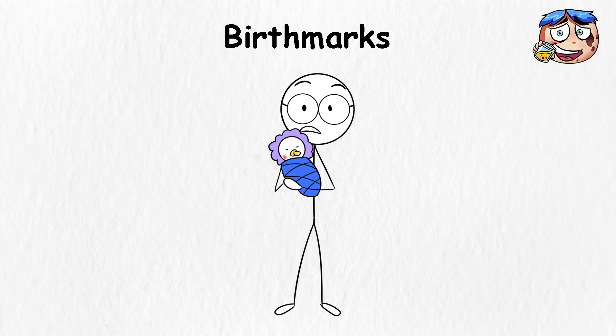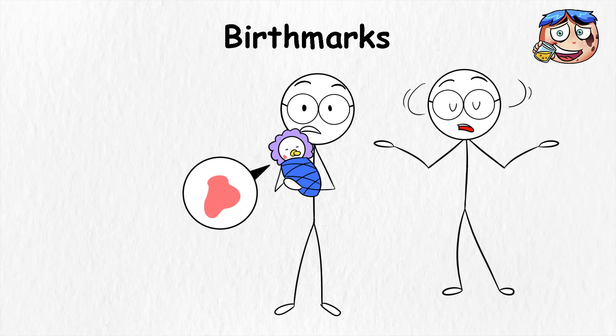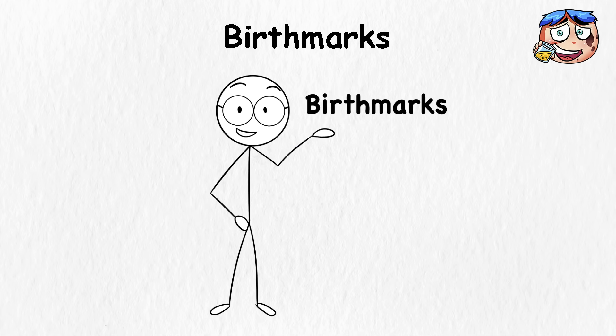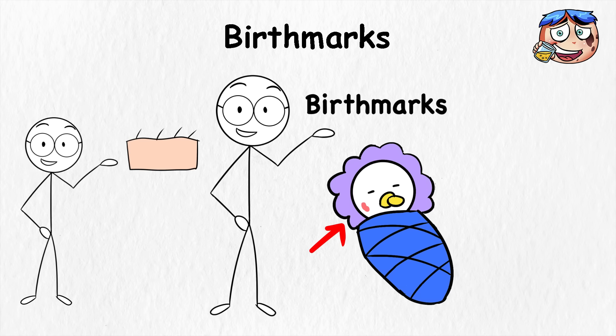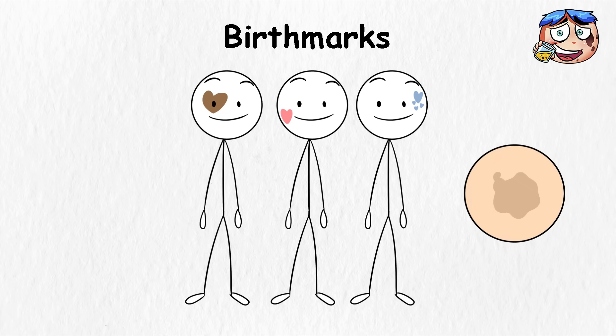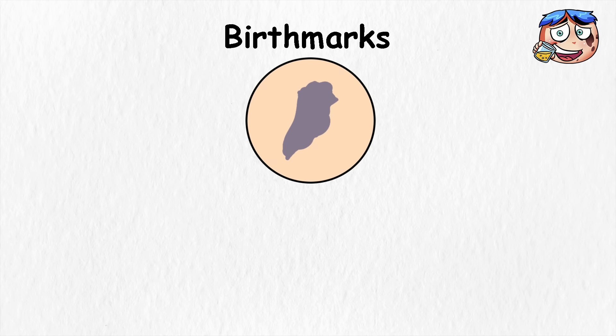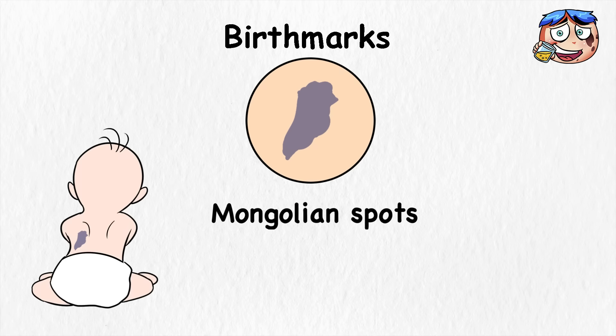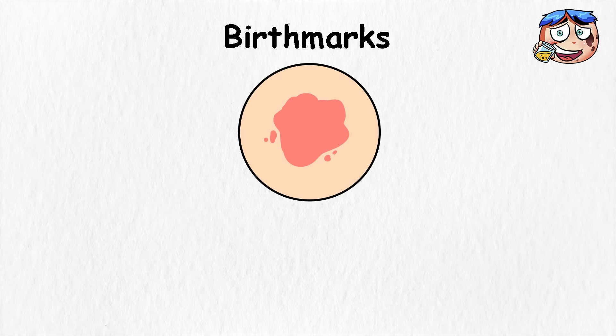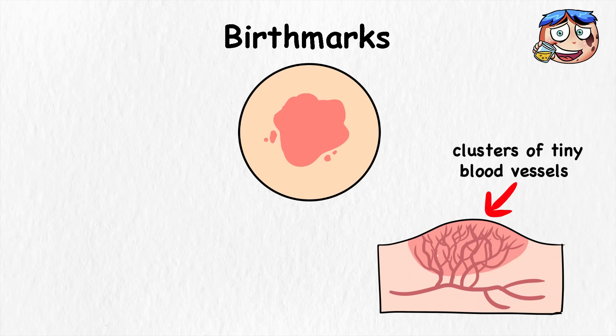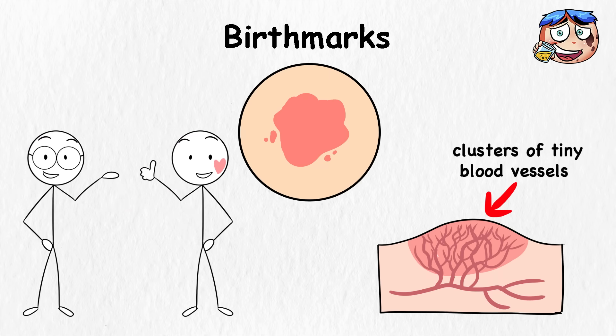Birthmarks. Some people are born with little patches of skin that stand out from the rest. And no, it's not because a baby rolled across a coffee table. These are birthmarks. They're there from the start, like skin deciding it wants a head start on being unique. They come in all kinds, like brown café au lait spots, look like someone dabbed a brush of hot chocolate on the skin. Blue-gray marks, often called Mongolian spots, usually show up on baby's backs or legs and fade as they grow. Then there are reddish marks caused by clusters of tiny blood vessels near the surface. Some fade, some stick around, and some move through life like a permanent signature.